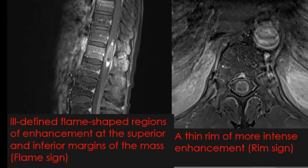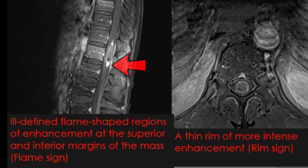A closer look at the post-contrast images shows ill-defined flame-shaped regions of enhancement at the superior and inferior margins of the lesion on the sagittal image — the so-called flame sign — and a thin rim of more intense enhancement on the axial image, the so-called rim sign.